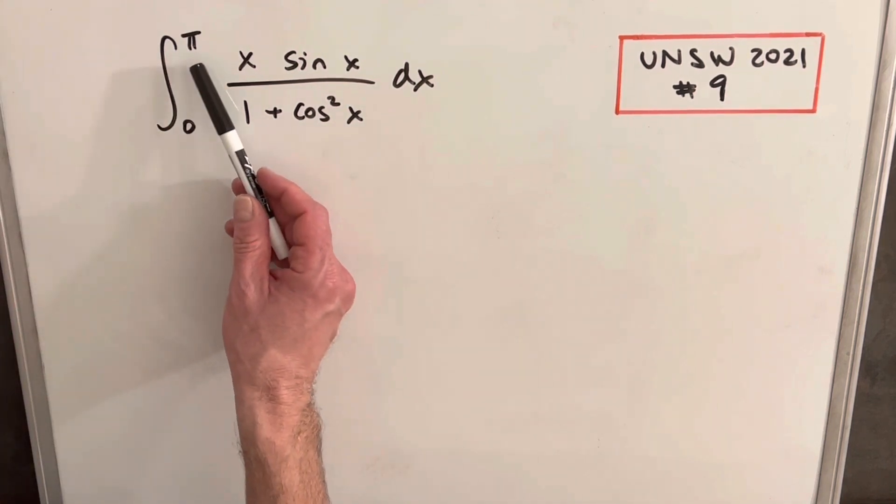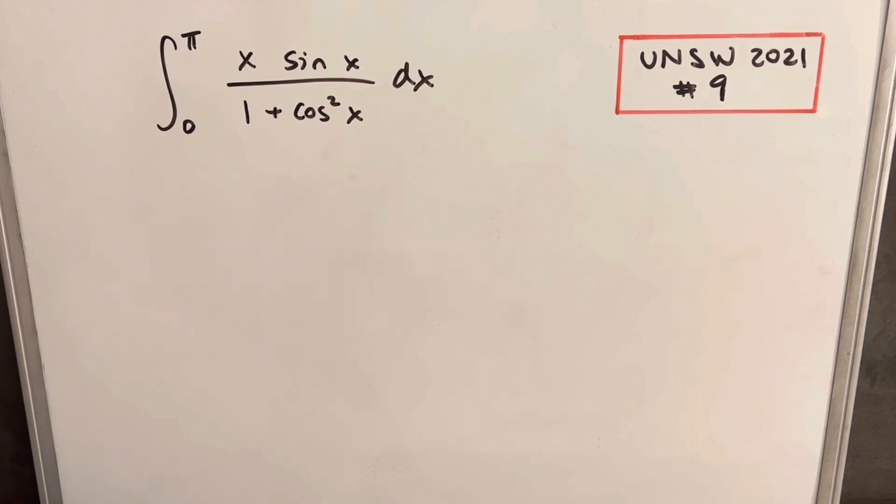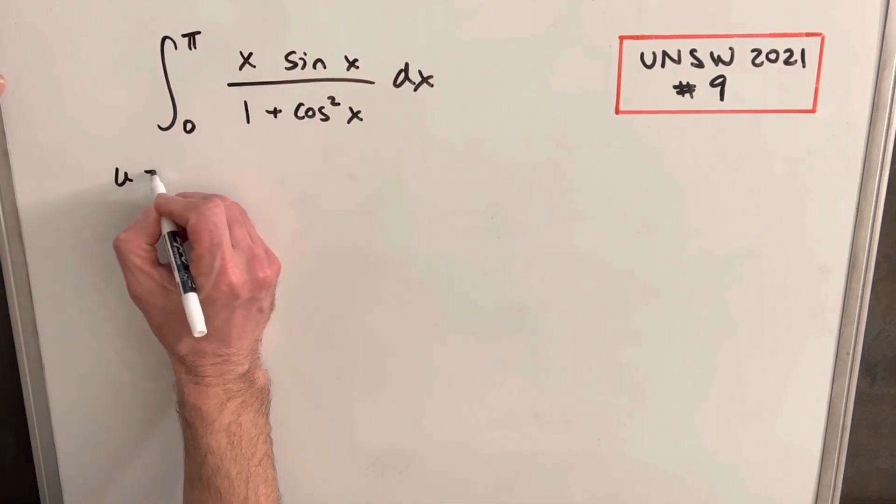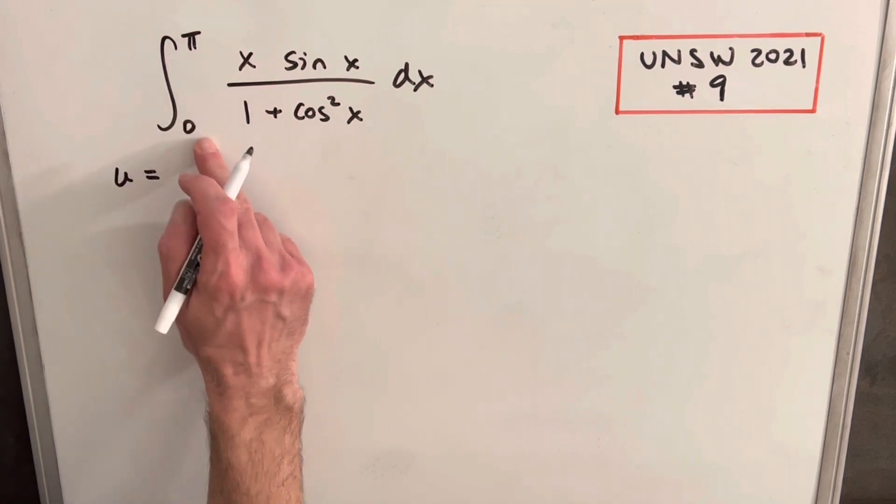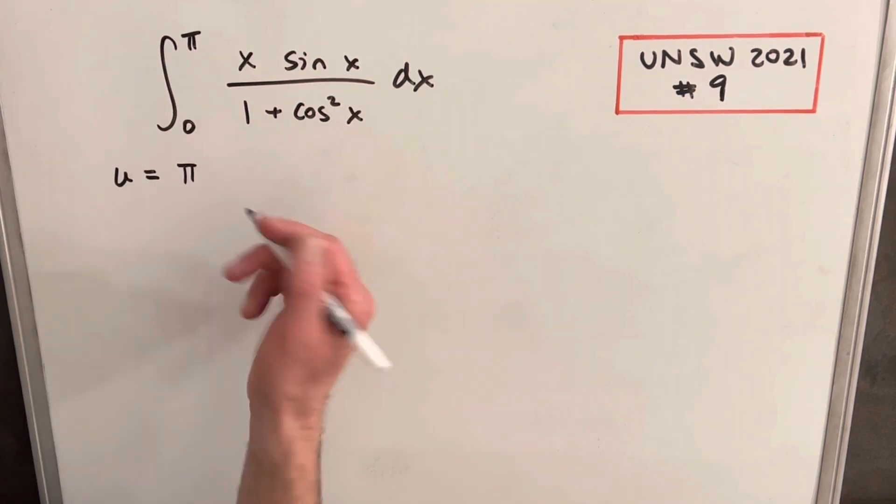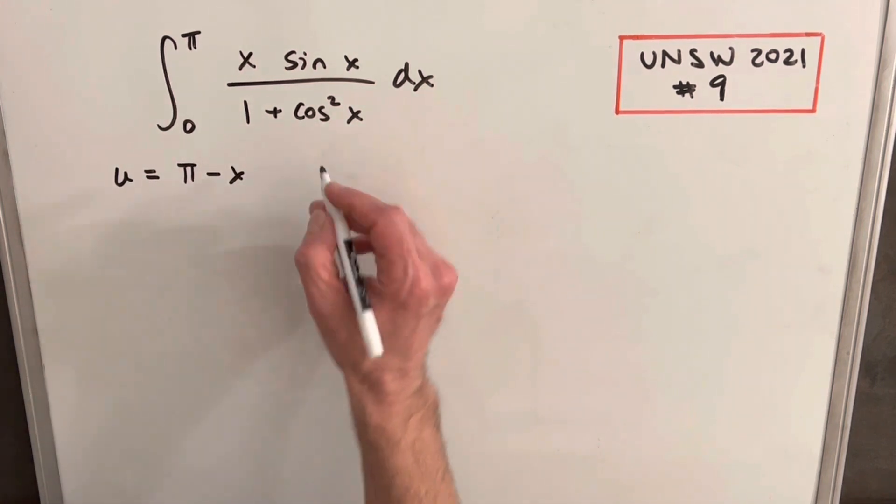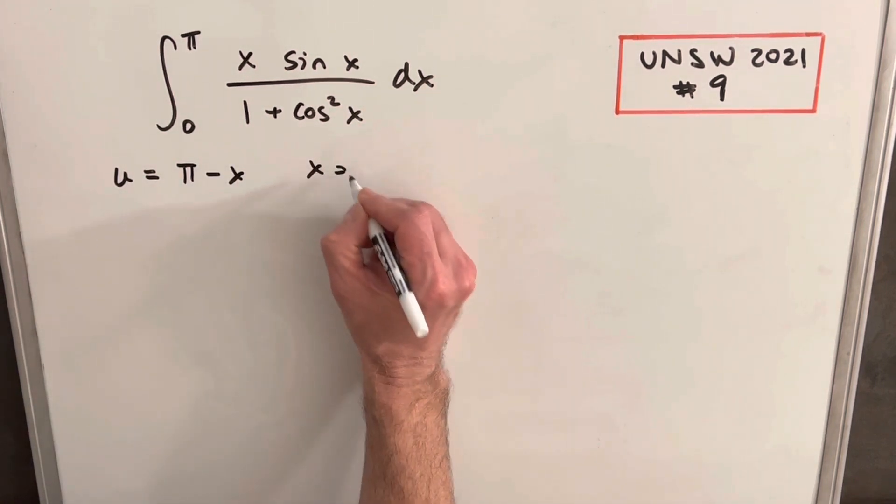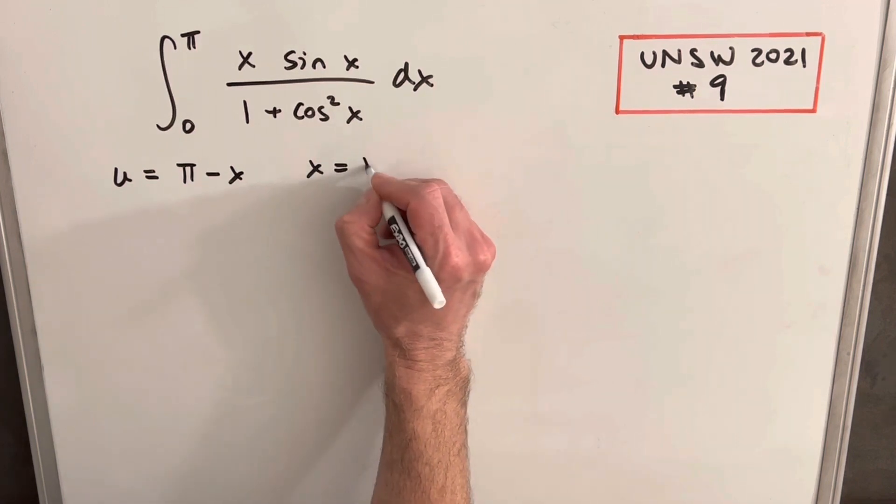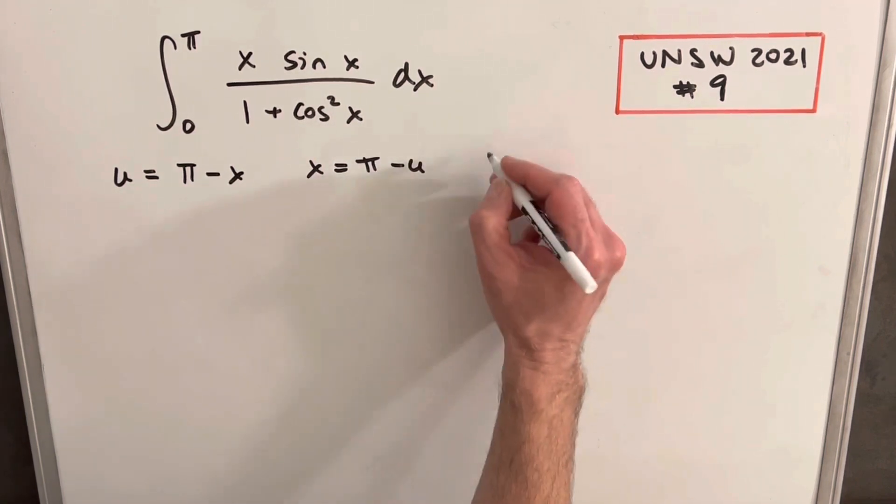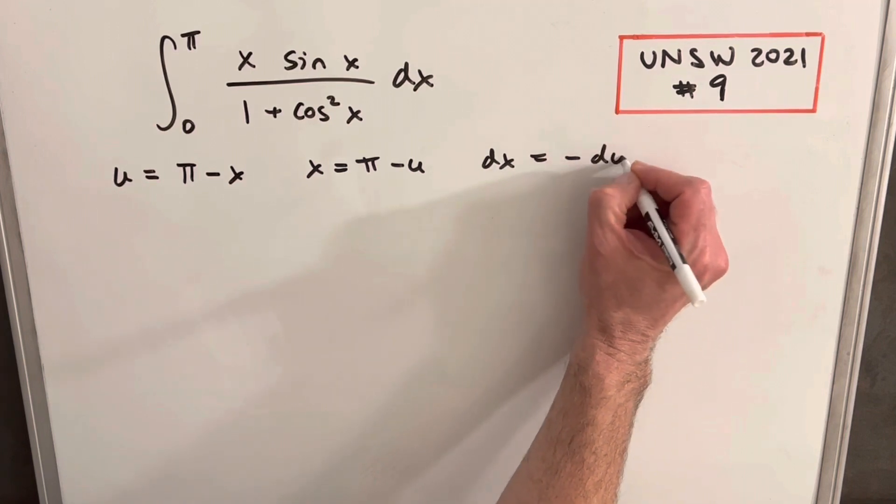What I wanted to notice is the bounds are interesting with trig functions, and I was thinking maybe the King's Principle might work. What we want to do is a u substitution, add the two bounds. So we're adding π and 0, which is just π minus x. Then we can also solve for x here, just shuffling things around. We're going to have x equal to π minus u. Then we'll take our derivative and we'll get dx equals minus du.